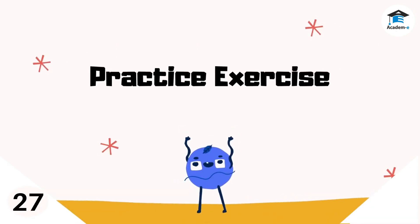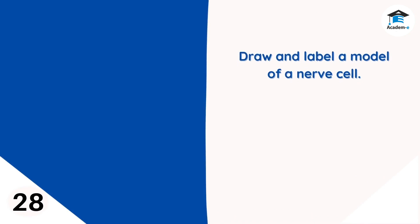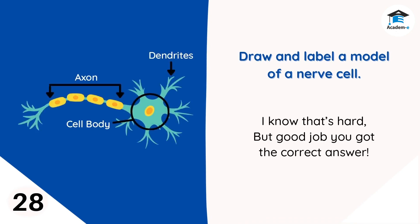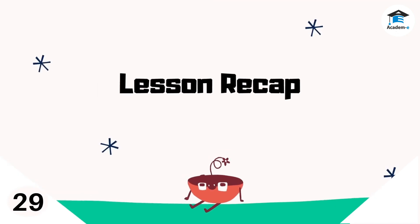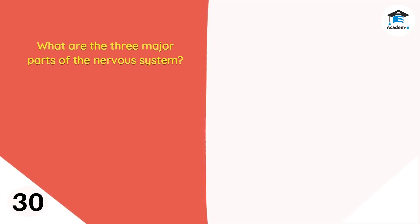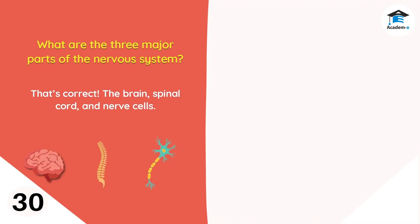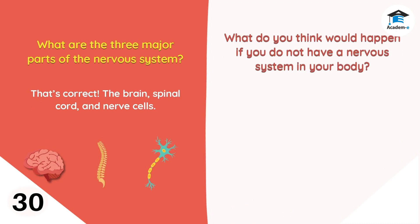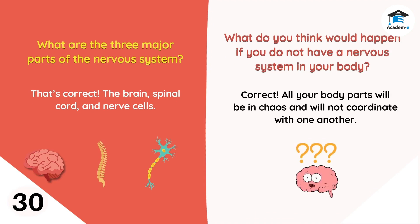Practice exercise: get a paper or bond paper and pencil, then draw and label a model of a nerve cell. Lesson recap: What are the three major parts of the nervous system? That's correct — the brain, spinal cord, and nerve cells. What do you think would happen if you did not have a nervous system? Correct — all your body parts will be in chaos and will not coordinate with one another.